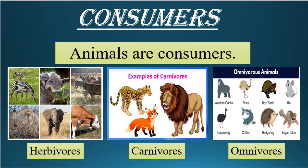Another example of a biotic component is the consumer. Animals are called consumers because they eat or consume other living things — that's why we call them consumers. These consumers are of three types: herbivores, carnivores, and omnivores.